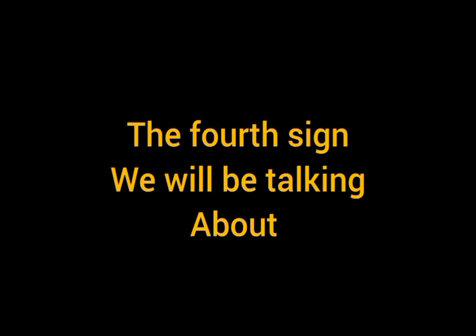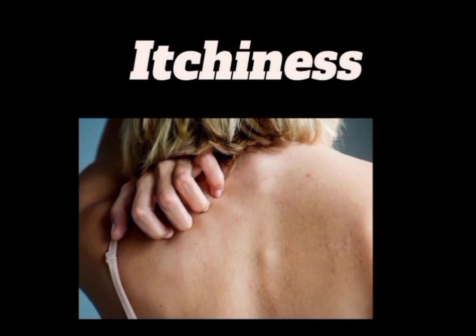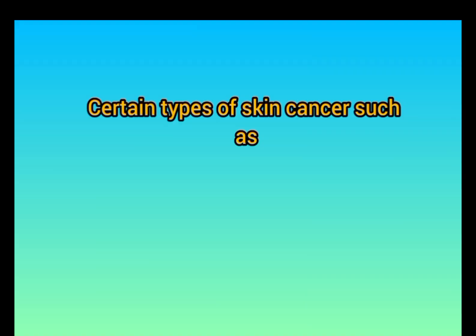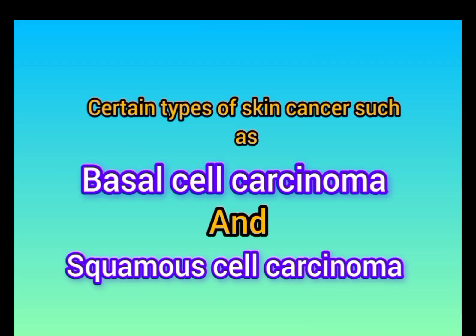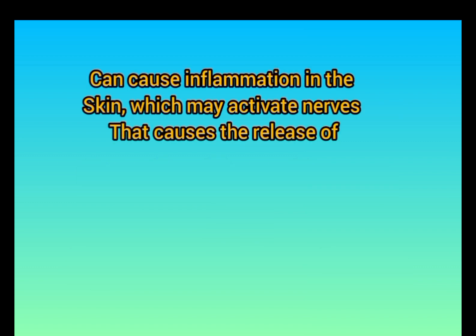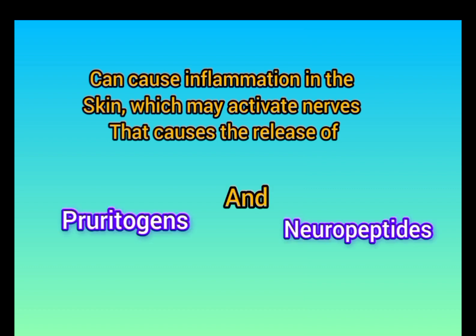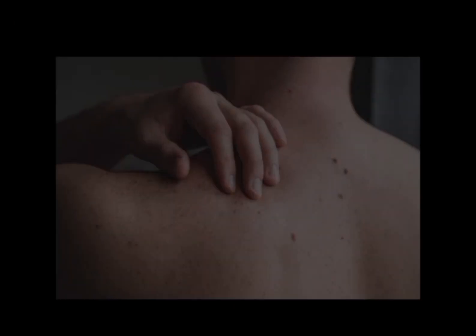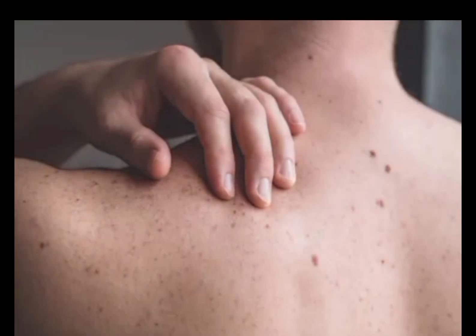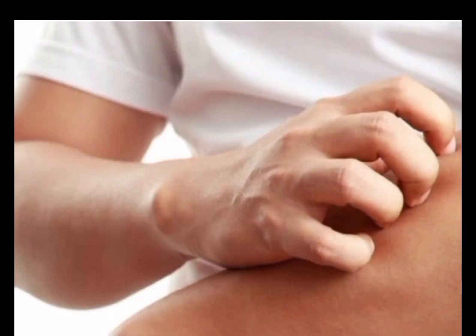The fourth sign is itchiness. Certain types of skin cancer such as basal cell carcinoma and squamous cell carcinoma can cause inflammation in the skin, which may activate nerves that cause the release of pruritogens and neuropeptides. These substances can trigger sensations of itching or discomfort. If you experience persistent itching or any other concerning symptoms on your skin, it is important to consult your doctor as soon as possible, as this could be as a result of cancer.